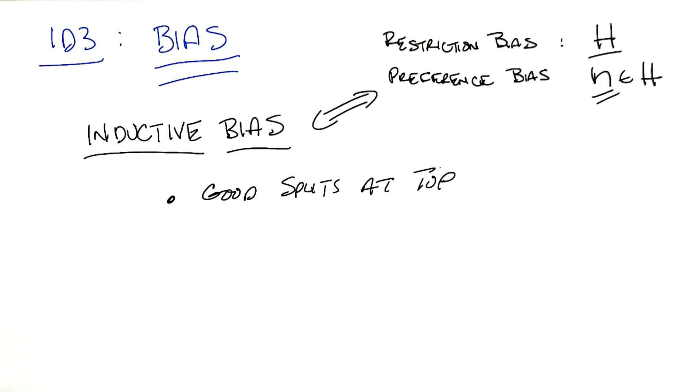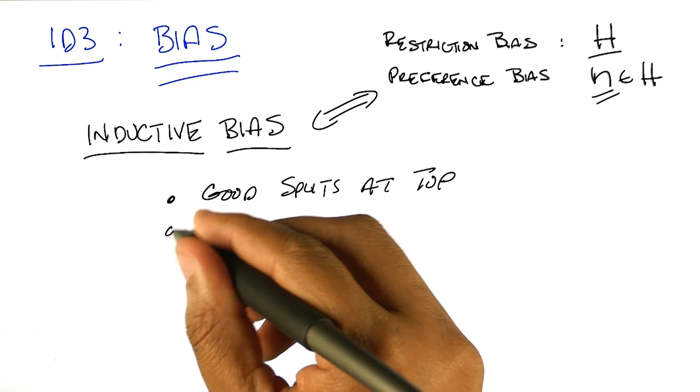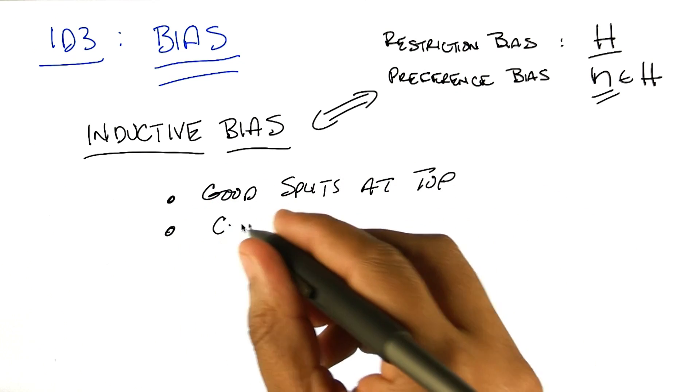So any other preferences, any other inductive bias on the ID3 algorithm? So, it prefers ones that model the data better to ones that model the data worse. Right. So this is the one that people often forget. It prefers correct ones to incorrect ones.